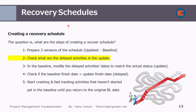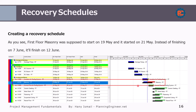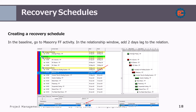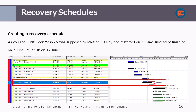I prefer to have a recovery schedule without updates. What I'm trying to do is to bring the planned date as near as the updated version. So we check the delayed activities in the updated schedule and modify the delayed activity dates to match the actual status in the baseline version. For example, if we have a delayed activity, we go back to the baseline and fix this activity so it completes on the forecast finish date shown in the updated schedule. Then we go to the successor activity and add a two-day lag to the relationship, pushing it two days because in the updated schedule it was delayed two days.